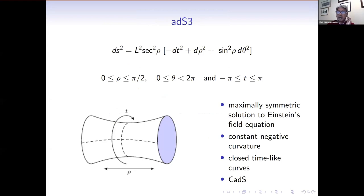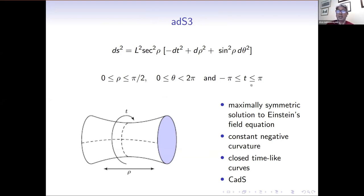Our background spacetime is three-dimensional Anti-de Sitter space, which is a maximally symmetric solution to Einstein's field equation with a constant negative curvature. Its metric is shown here, where L is the length scale which we set to 1, rho is our radial coordinate which runs from 0 to pi over 2, pi over 2 being the spacetime boundary. The feature is the angular coordinate, and interestingly, time is periodic in ADS and runs from minus pi to pi, where minus pi and pi are identified.